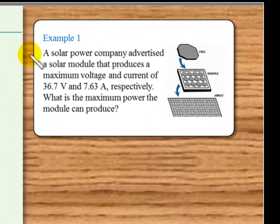In this example, we have a solar power company that's advertised a solar module that produces a maximum voltage and current of 36.7 volts and 7.63 amps respectively. What is the maximum power the module can produce?